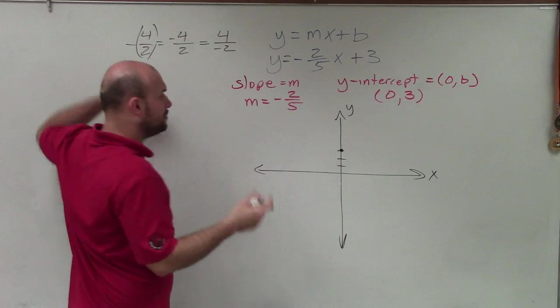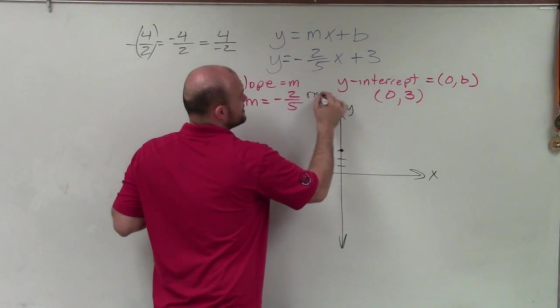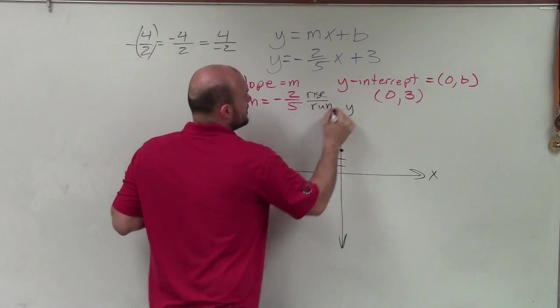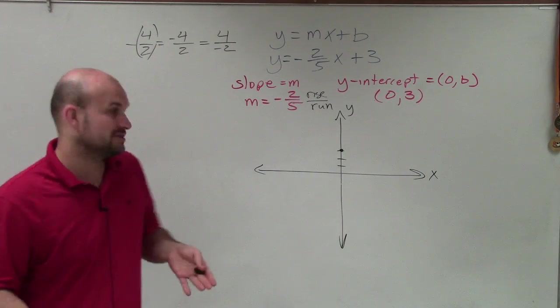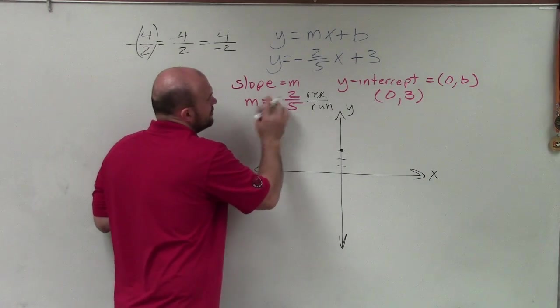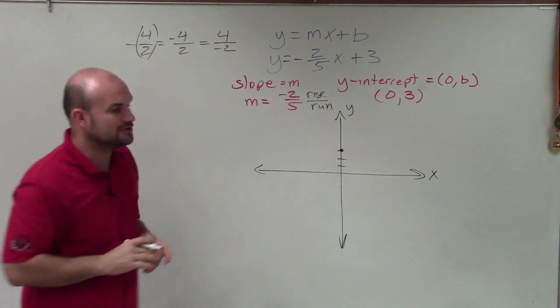But remember, slope, which a lot of times we write as rise over run, as well as our change in y over our change in x. So I'm going to put the negative 2 up top, and we'll go and find our next two points.